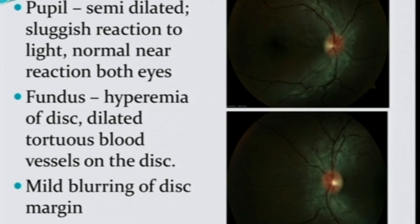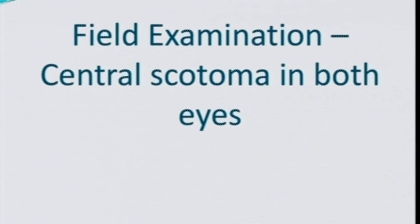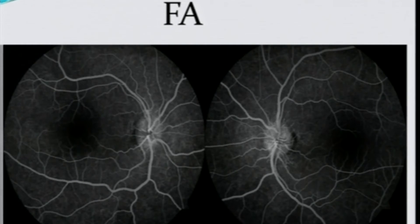This type of fundus picture in a young male with maternal-side family history of visual loss points to a hereditary optic neuropathy — specifically Leber's Hereditary Optic Neuropathy (LHON). LHON classically presents with dilated telangiectatic blood vessels over the disc in a male between the ages of 10 to 30 years with a maternal family history of visual loss. Field examination showed dense central scotoma, because the macular retinal ganglion cells are mainly affected. The patient cannot read or identify faces, but can move around due to preserved peripheral field.